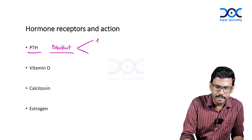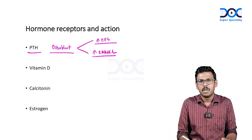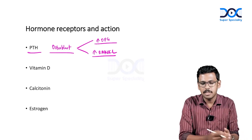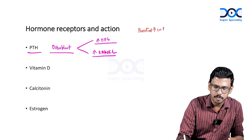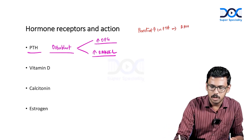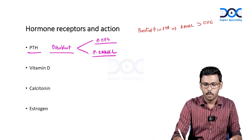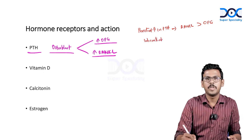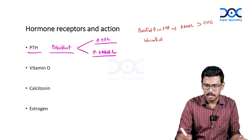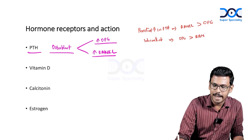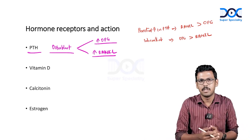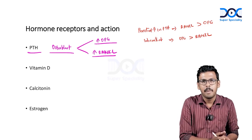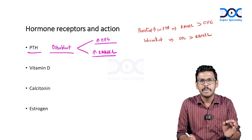PTH has two functions via osteoblast receptors: increase osteoprotegerin and increase RANK ligand. The net effect depends on the balance. In persistent PTH elevation as in hyperparathyroidism, RANK ligand predominates over osteoprotegerin, causing net bone resorption. With intermittent PTH rise — as with recombinant parathyroid hormone teriparatide — osteoprotegerin predominates over RANK ligand, resulting in net bone formation.